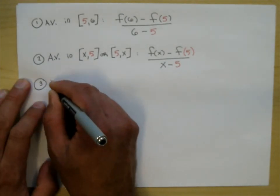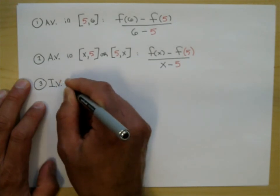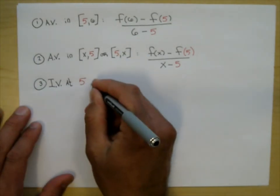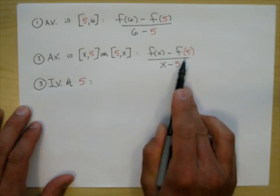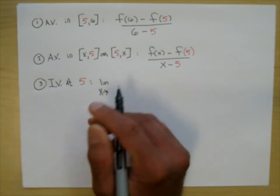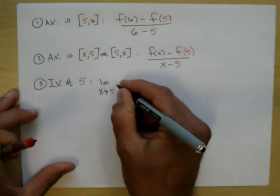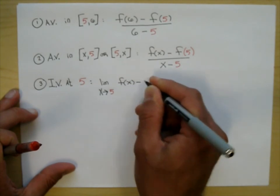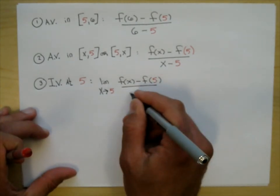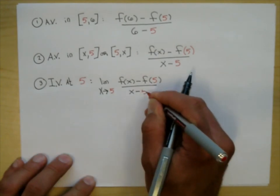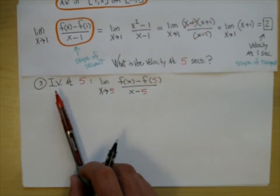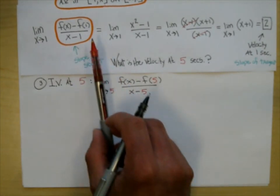Problem number 3: what is the instantaneous velocity at time 5? All it would be is the limit as x approaches 5 of F of x minus F of 5, all over x minus 5. That's pretty much what we did when looking for instantaneous velocity at 1 — it looks the same, except now we have 5s there.